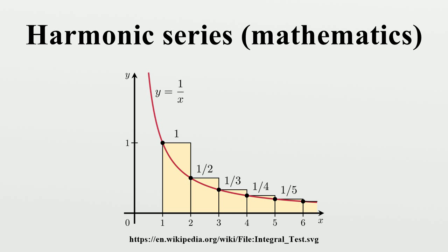The nth partial sum of the diverging harmonic series is called the nth harmonic number. The difference between the nth harmonic number and the natural logarithm of n converges to the Euler-Mascheroni constant. The difference between distinct harmonic numbers is never an integer. No harmonic numbers are integers, except for n equals 1.